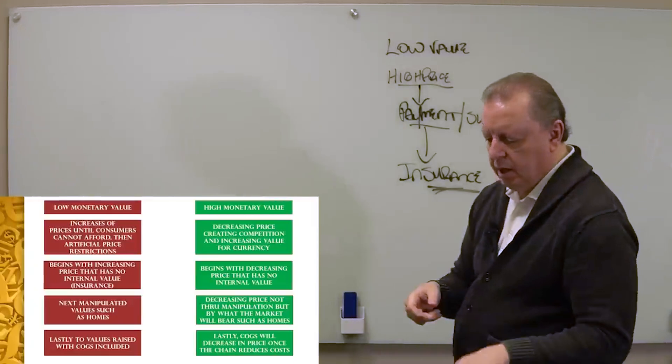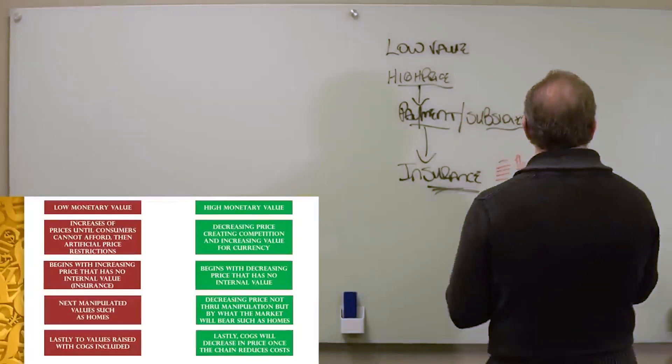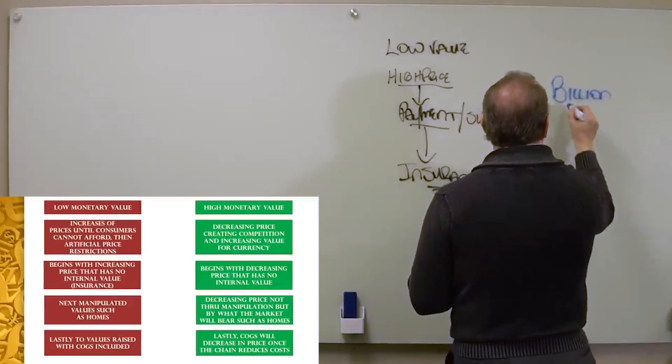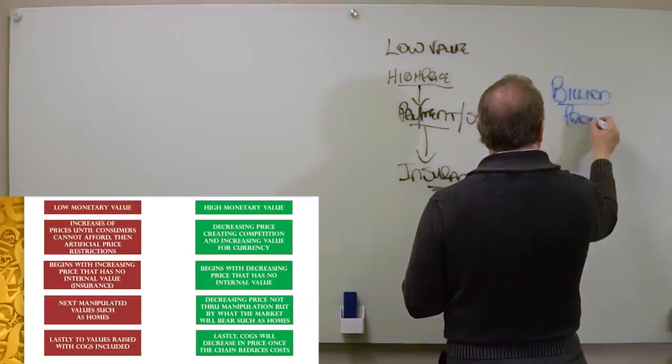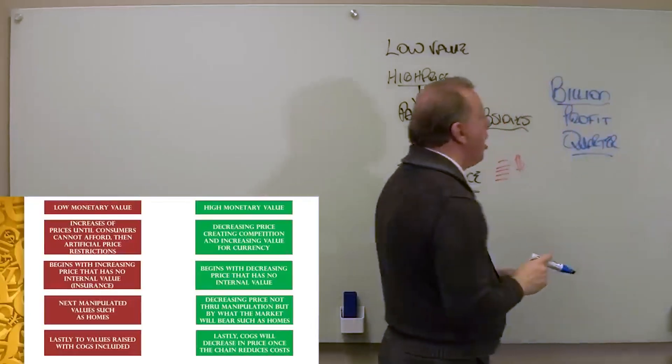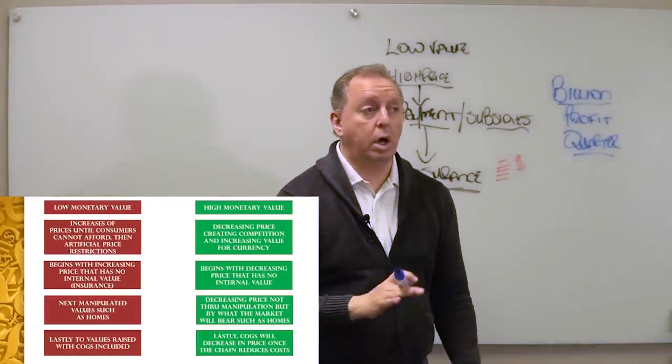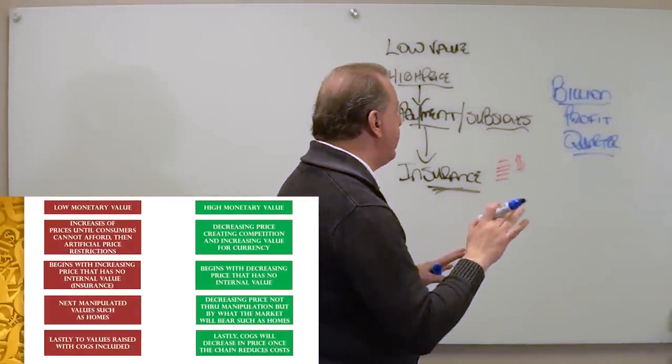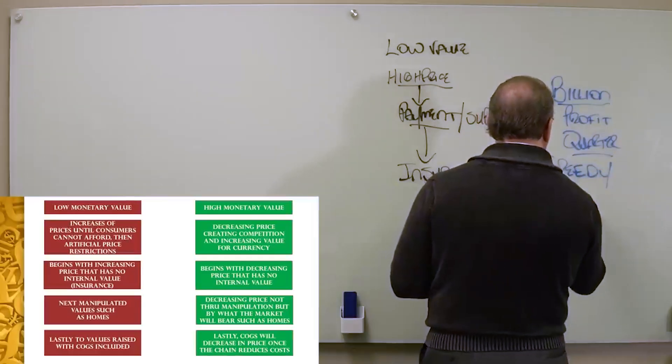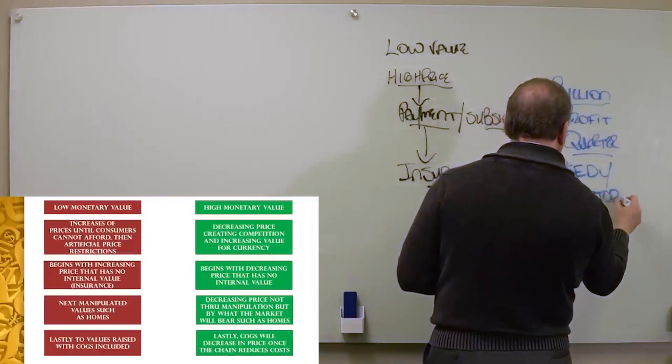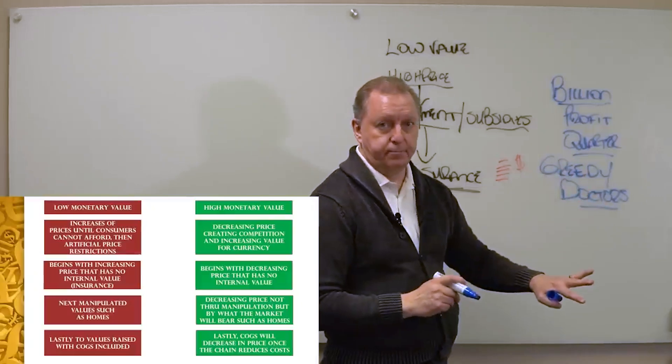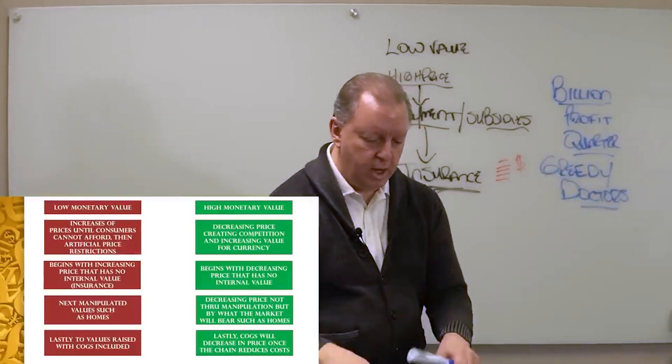I'm going to tell you some fascinating points here because this is how sick the health insurance points are. Most of these health insurance have billion with a B profit quarters, not year, profit quarters. And they tell you that the problem is the greedy doctors.